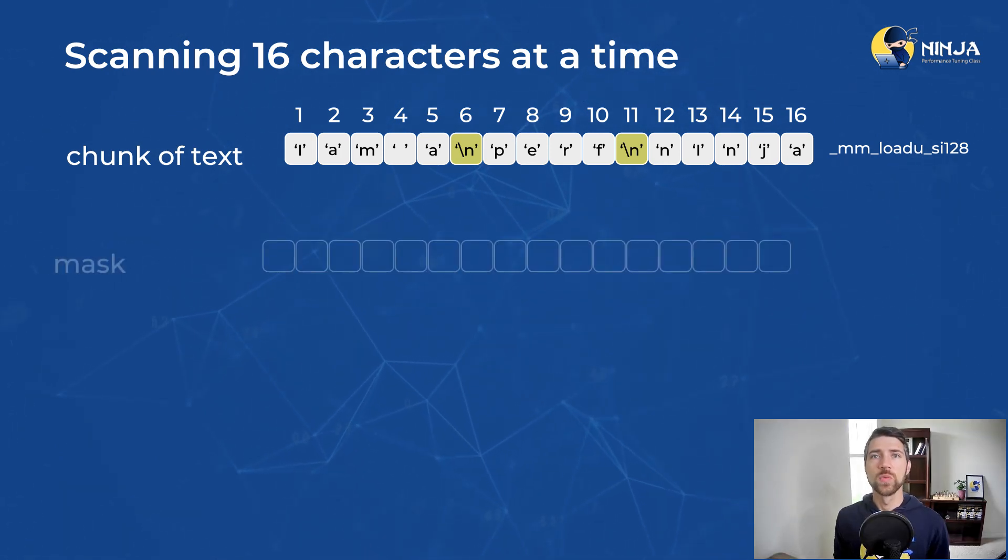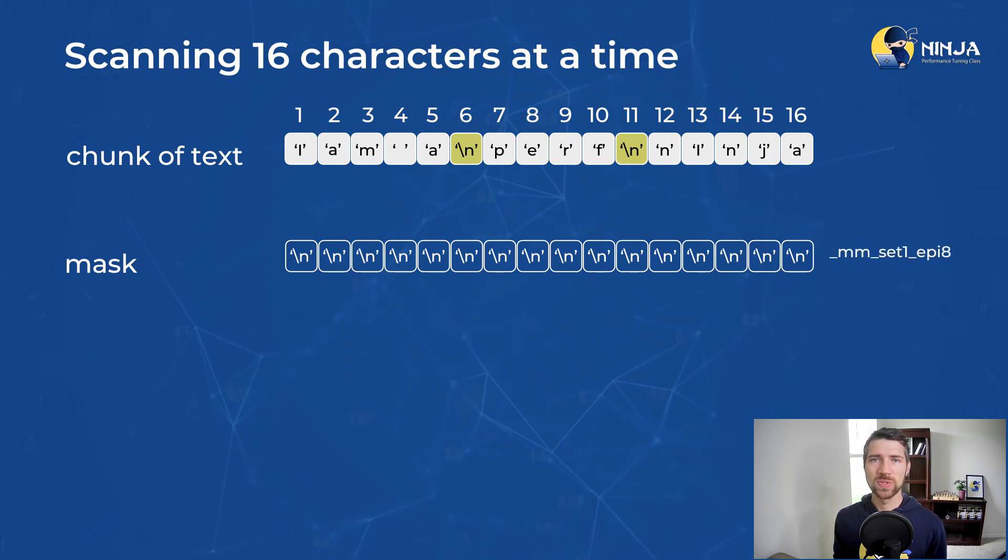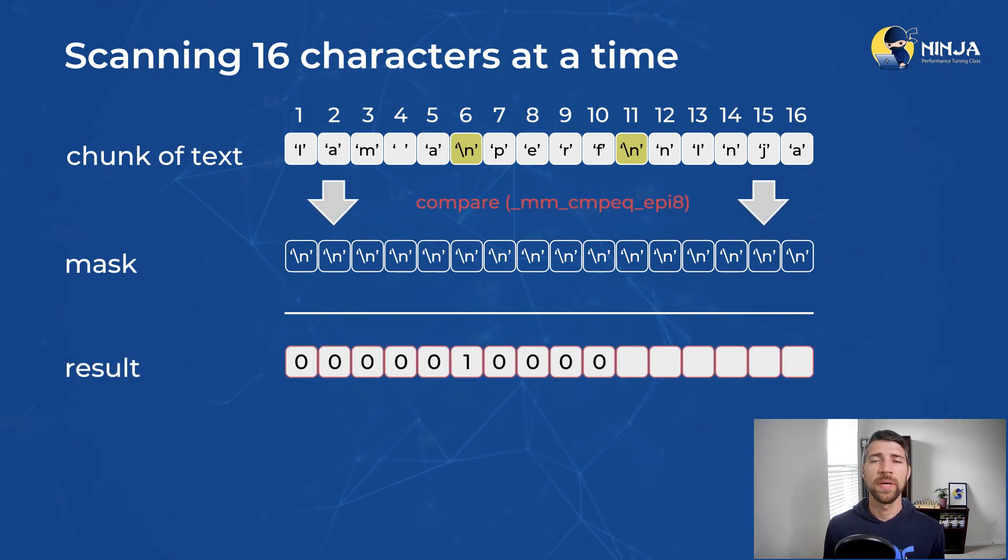Next, we prepare a mask and populate it with end of line characters since those characters separate the lines from each other. And so basically the number of characters between two end of line symbols is the length of the line. Now we need to compare our chunk of text with the mask. This will be a vector compare.